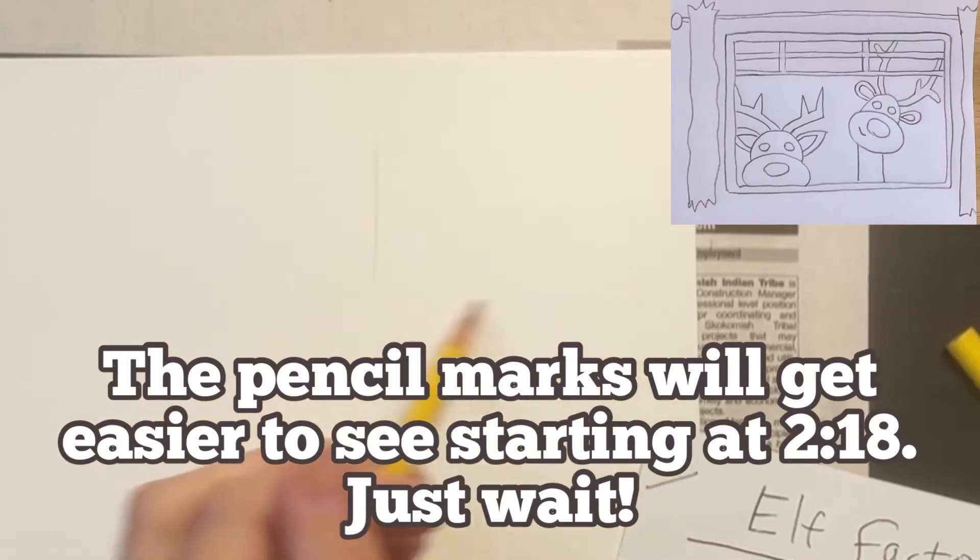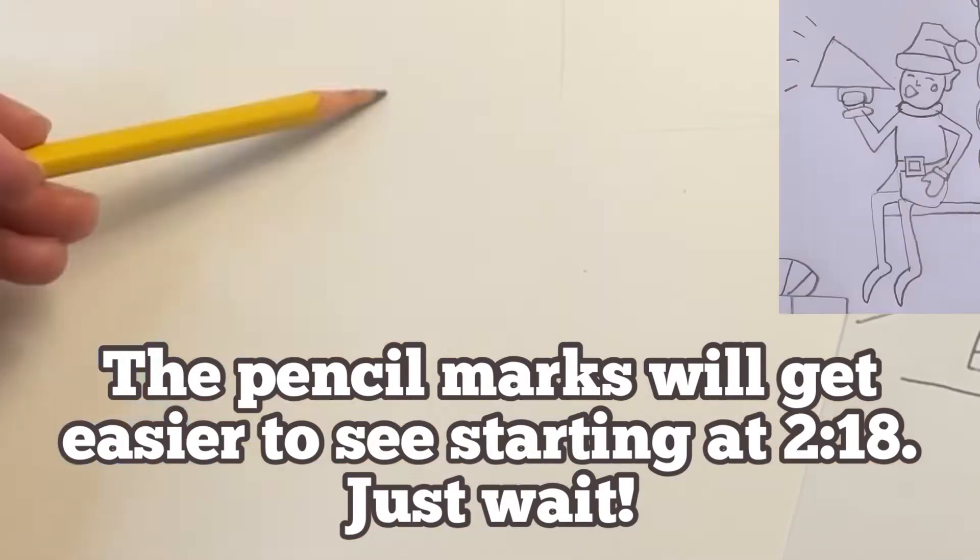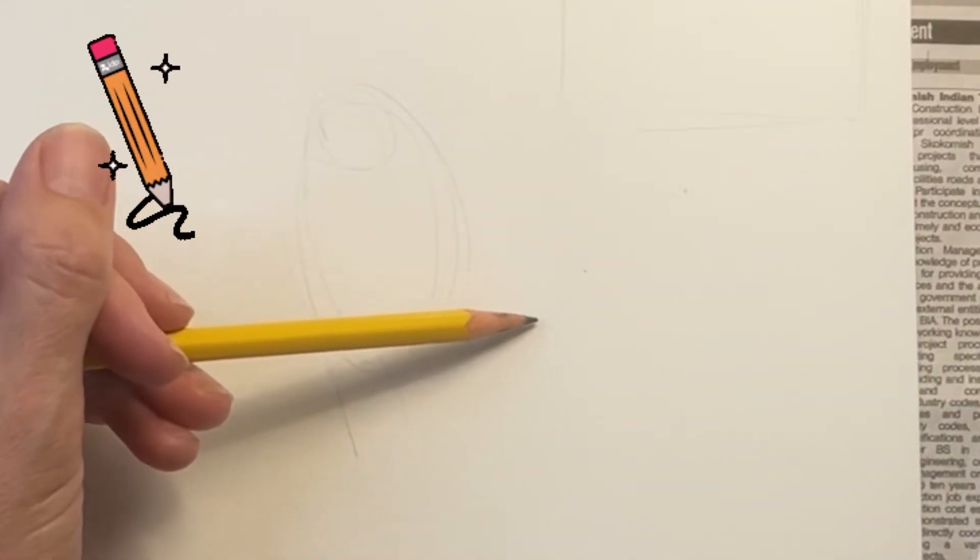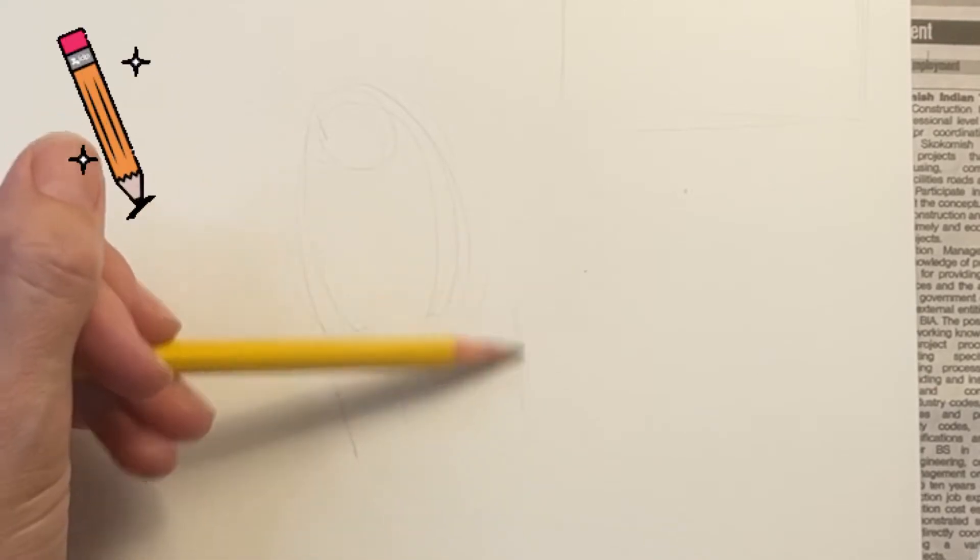I'm going to start by drawing a rectangular window in the upper right corner. I'm sketching an oval here where I'm eventually going to draw an elf. I know the pencil marks are really light right now, but hang on because you'll be able to see them better in just a minute.